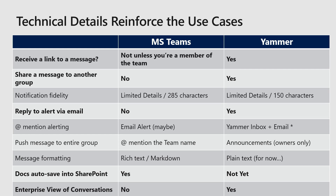Documents: when I add a document into the thread in these tools, where does it go? In Teams, it goes into the document library in SharePoint, so you get all the SharePoint goodness — really effective for collaborating and co-authoring with other people. In Yammer, for now it goes to legacy Yammer storage, but soon it will be going into SharePoint as well.